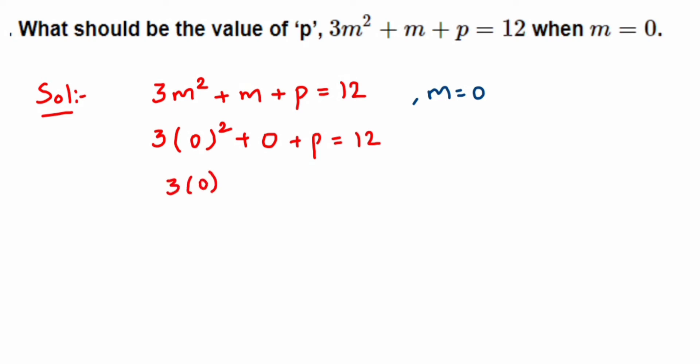So 3 × 0 = 0, plus 0, plus p = 12. Now 3 × 0 is 0. When you multiply 0 with any number, the answer is always 0.